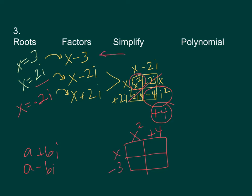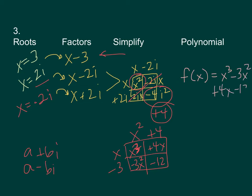Now multiply x squared plus 4 by the other factor, x minus 3. That gives x cubed plus 4x minus 3x squared minus 12. Writing that in standard form: f of x equals x cubed minus 3x squared plus 4x minus 12.